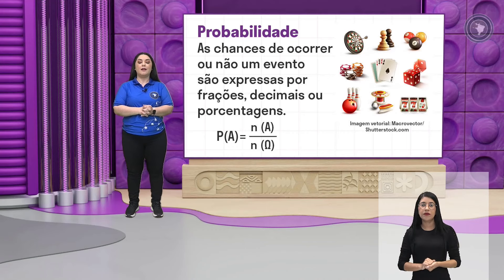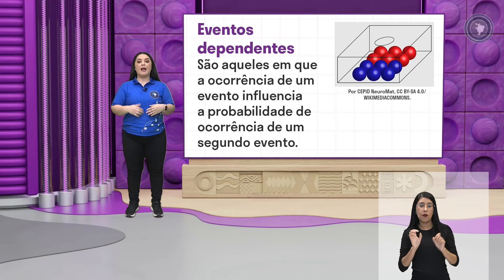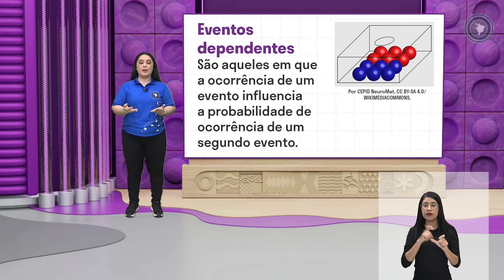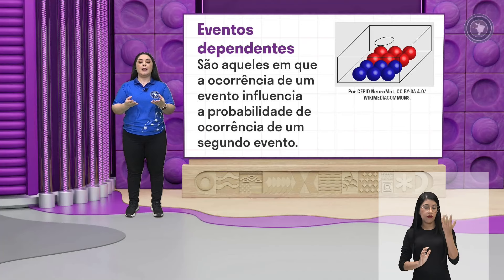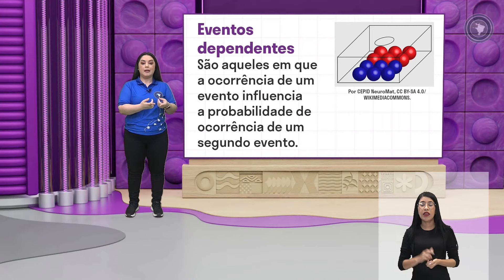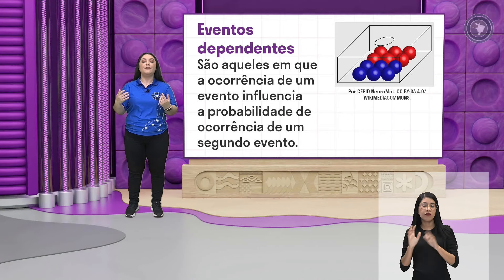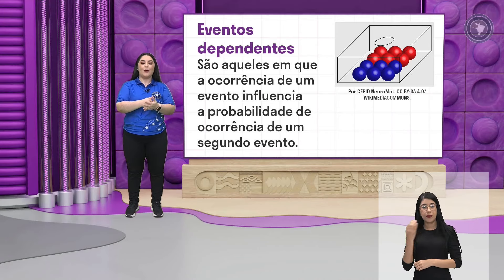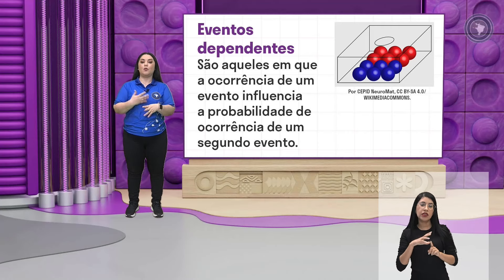Continuando, a gente vai ver o que seriam eventos dependentes. Eventos dependentes são dois ou mais eventos em que, quando ocorre um evento, a ocorrência desse evento vai influenciar na ocorrência do outro evento. Como vocês estão vendo na imagem, a ocorrência de um evento influencia a probabilidade da ocorrência de um segundo evento.